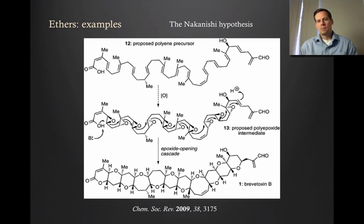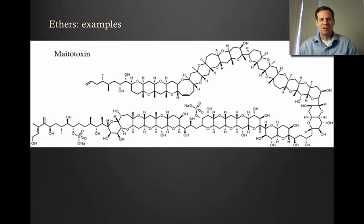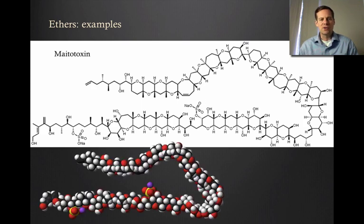There's a whole number of these ladder polyethers, and we won't go through most of them, but I did want to show you the granddaddy of them all, which is a molecule called maitotoxin. You can see that this is an absolutely gigantic molecule, with what I believe is 32 different ether rings, an absolutely enormous number of stereocenters, and even some interesting functionality, like a couple of sulfonate groups hanging off there, a truly spectacularly big molecule. I show here a space filling model of what this molecule looks like. It has this weird curving shape.